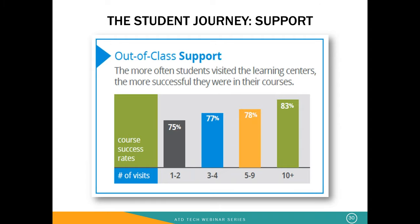One of the most important metrics we track are our success rates. We also weekly report on the frequency of visits students make to our learning centers, tracking one to two, three to four, five to nine, and ten or more visits. Students who come into a learning center ten or more times have an 83% success rate. It is 80% or more across all of our college campuses, including campuses where we struggle the most with populations of students who are not well prepared or who have been out of college for quite some time.